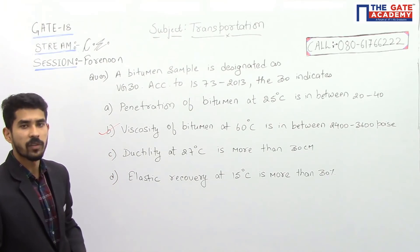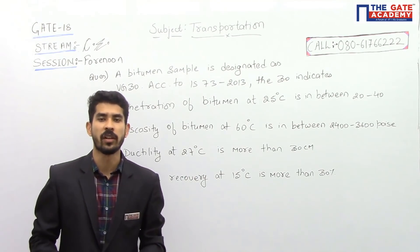So the correct option is option B: viscosity of bitumen is in between 2400 to 3600 poise.